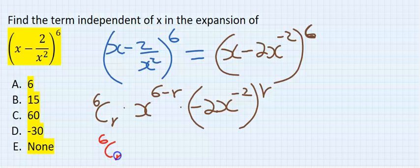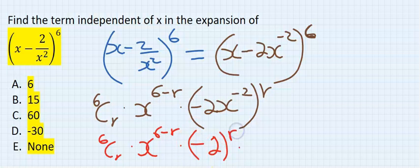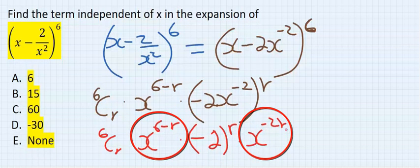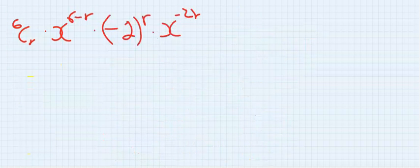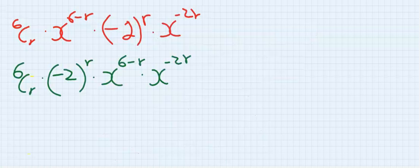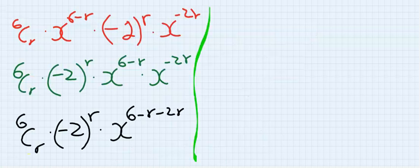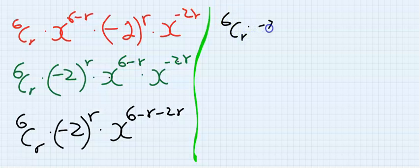6 combination r, x to the power of 6 minus r, minus 2 to the power of r, x to the power of minus 2r. Bring these two x to one side. Applying law of indices here, I will add these two variables and I will have 6 combination r, minus 2 to the power of r, x to the power of 6 minus 3r.